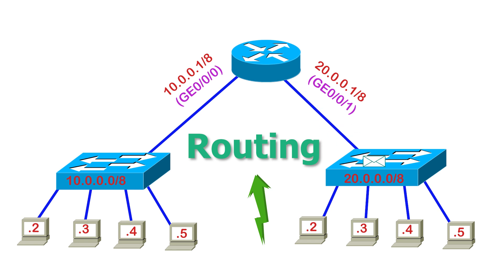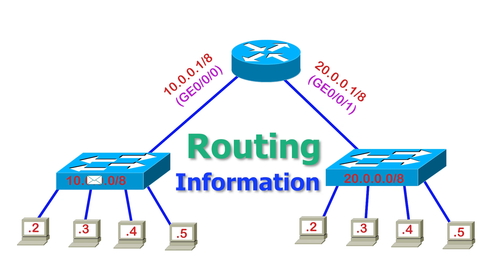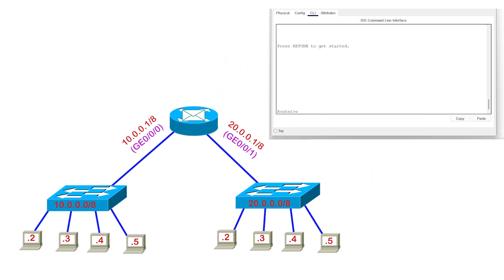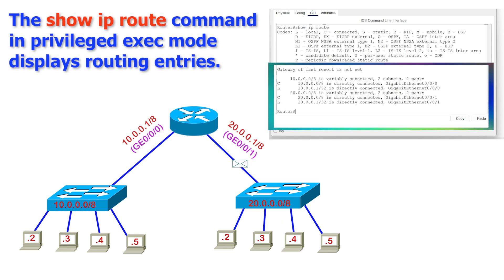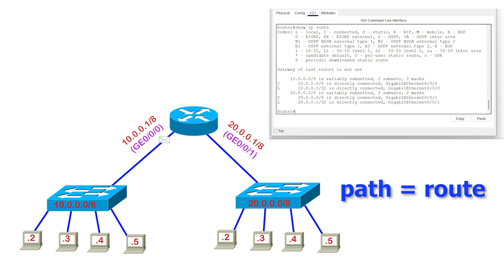The information a router uses to make the forwarding decision is called routing information. It saves this routing information in the routing table. Routing information includes paths and related information of connected devices on all interfaces. A path is called a route.